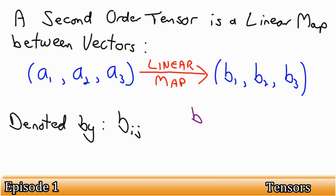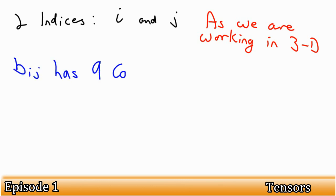This can be denoted by bij. b is arbitrary and can be replaced with another letter. Notice our two indices, i and j. Because both indices, by convention, are three-dimensional, that is to say, i equals 1, 2 and 3, and j can equal 1, 2 and 3 as well. The tensor bij has nine components.